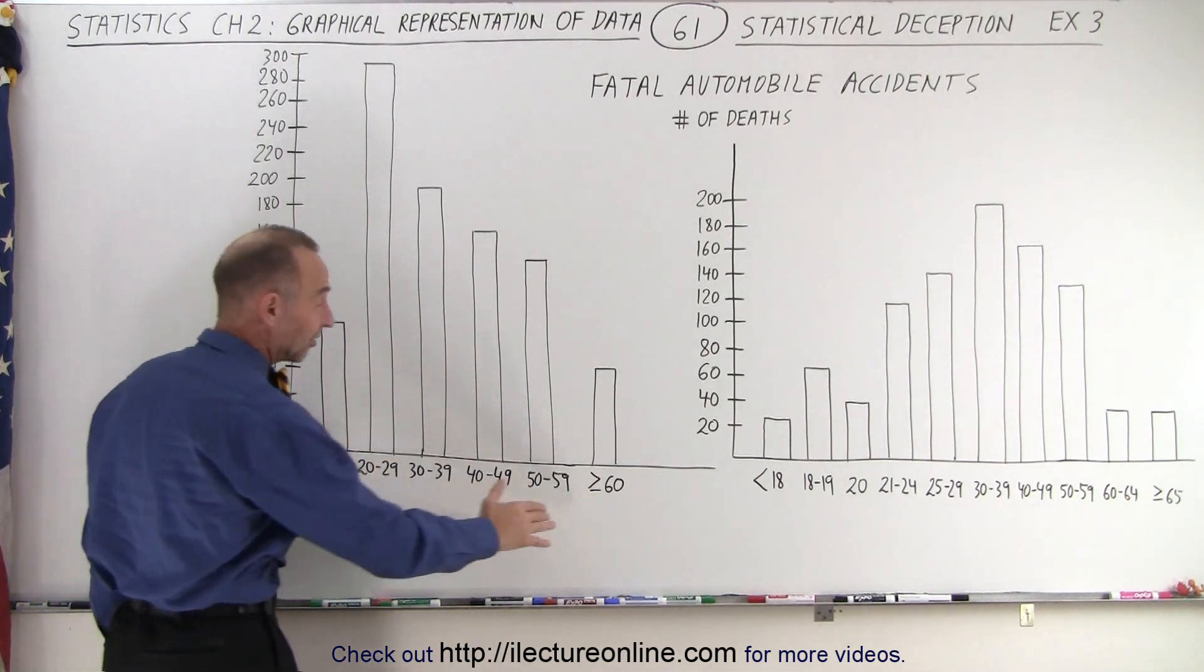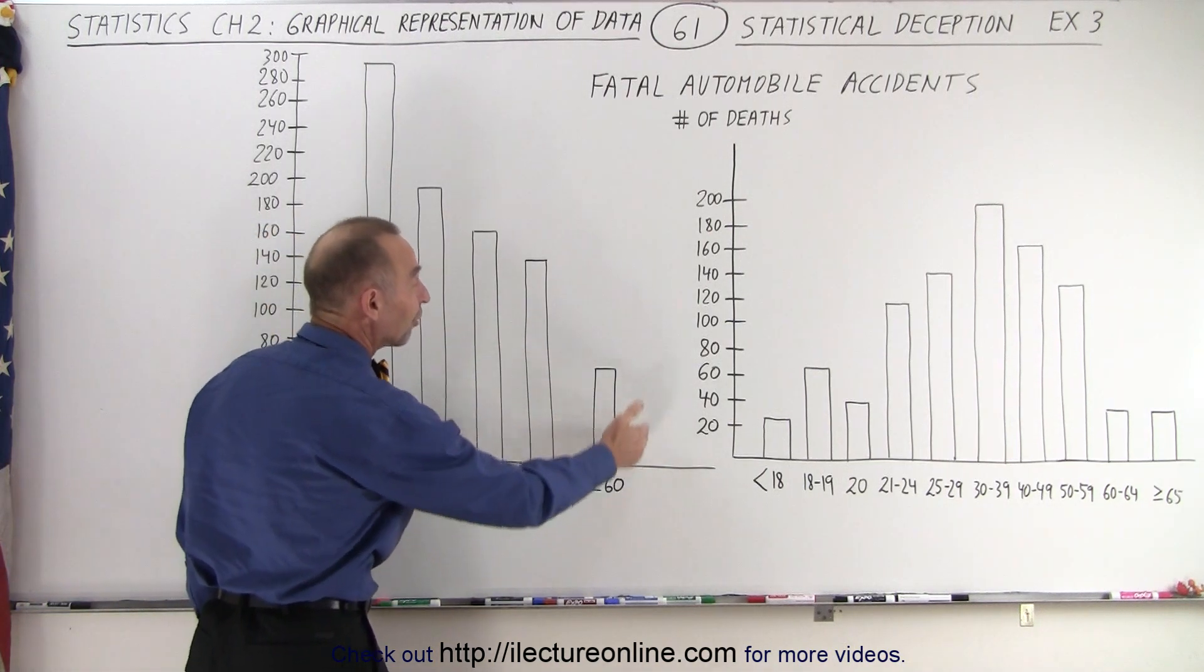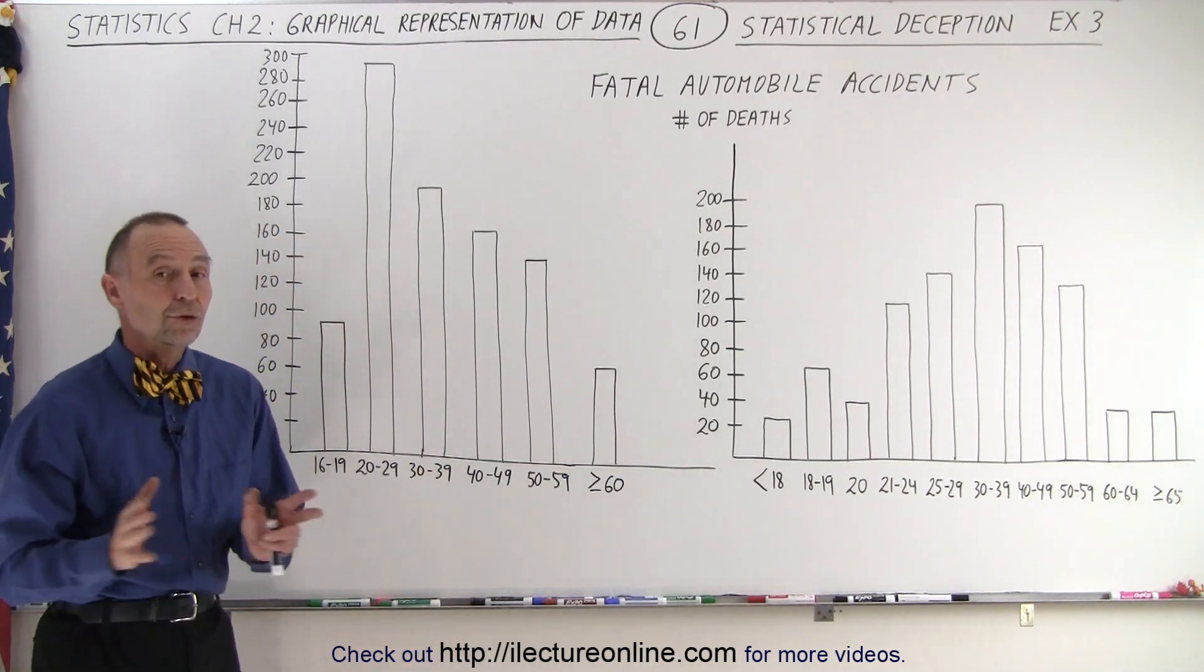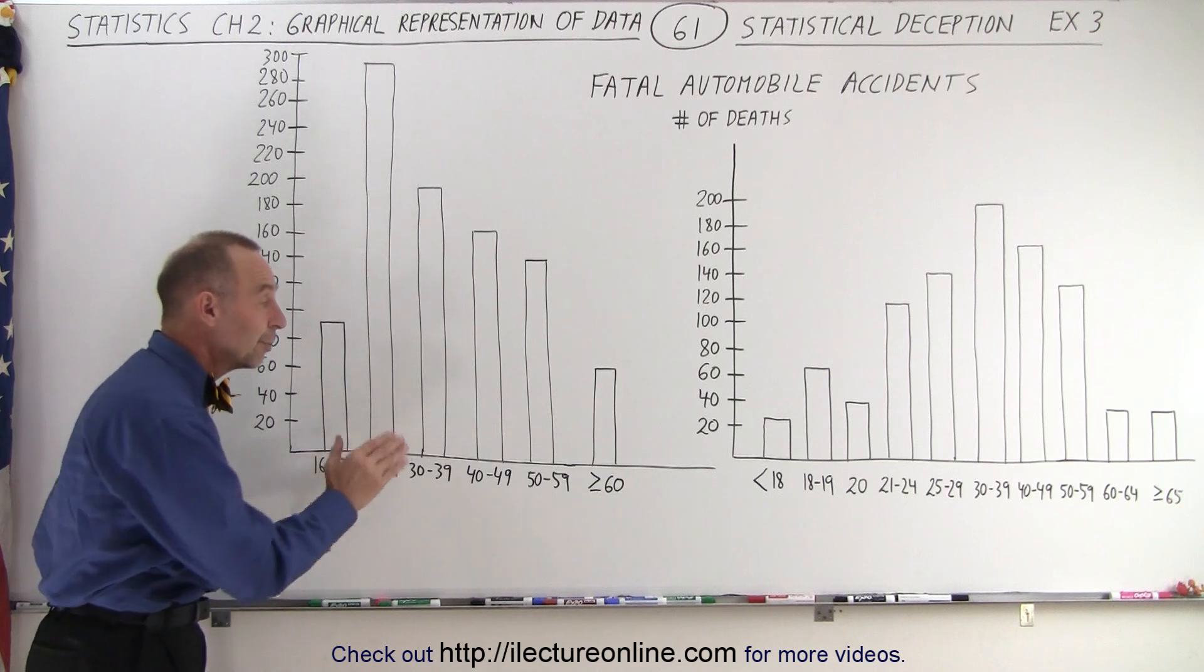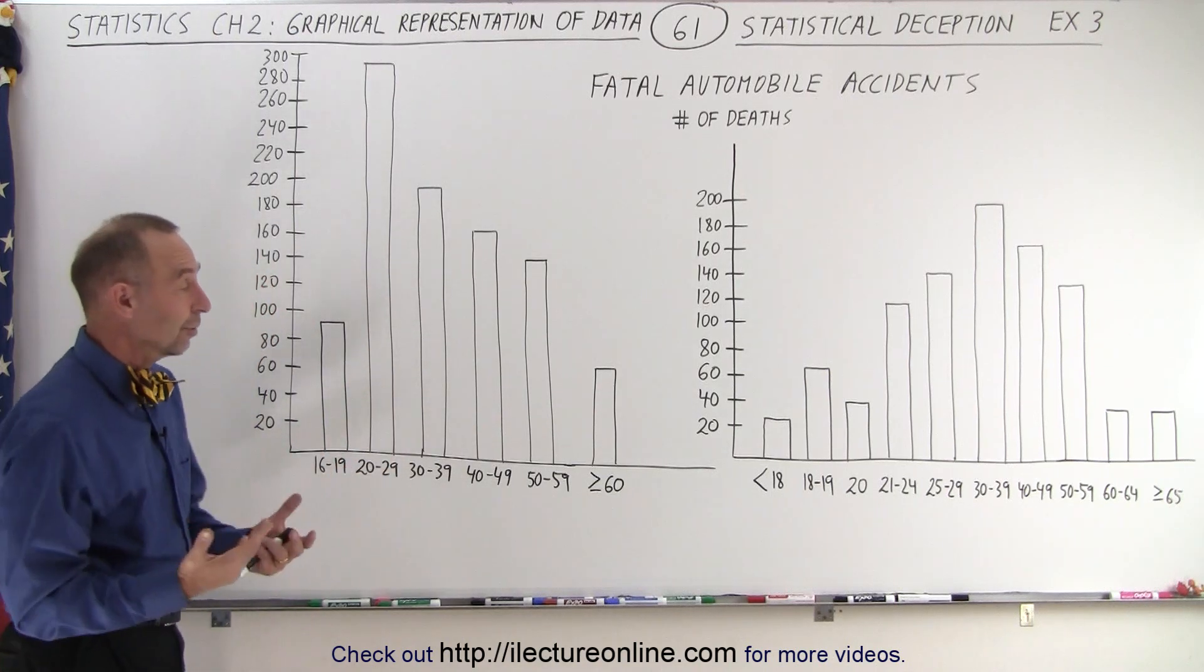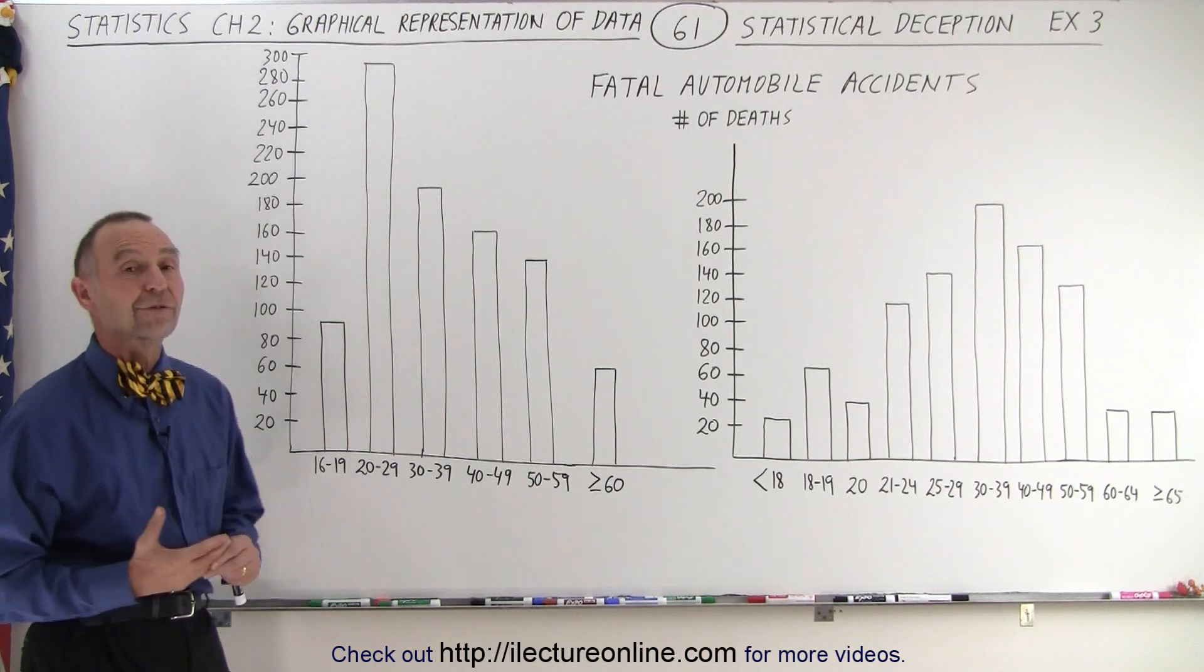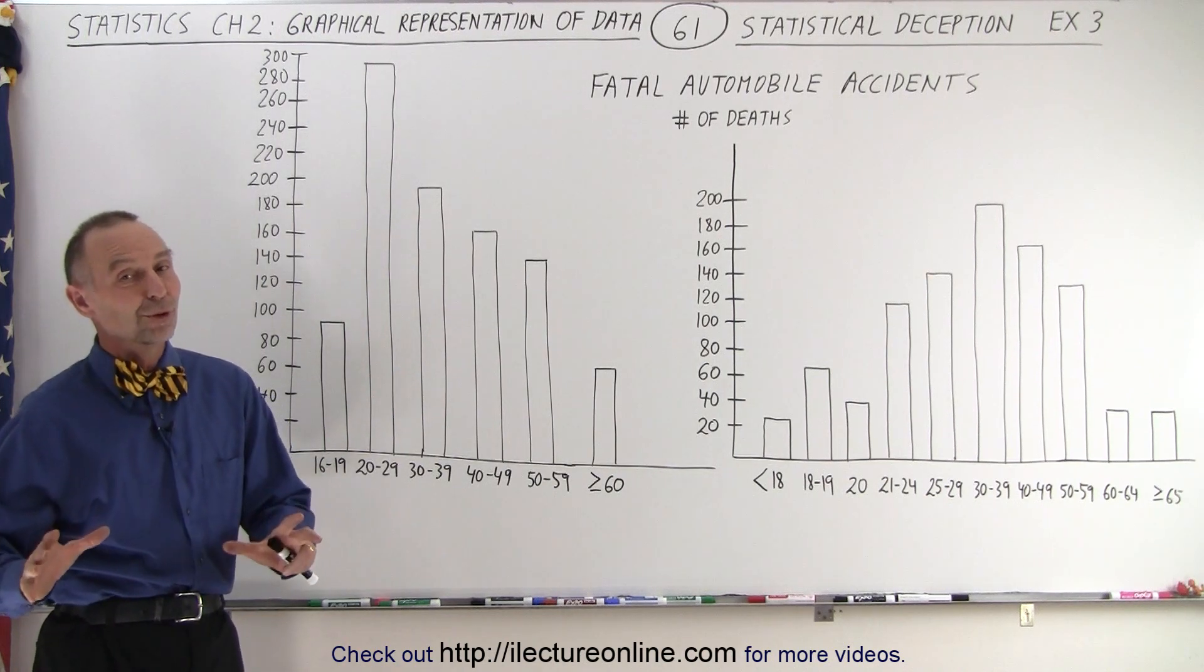Now, the category of 16 and over, it would appear that far fewer drivers of that age cause accidents. That could be because there's a lower number of people of that age driving or simply when they get to be that age, you just simply take it nice and easy, go very slow and cause far fewer fatal accidents.